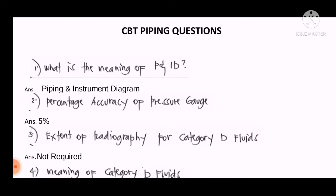Question number two: What is the percentage accuracy of a pressure gauge? First we will define pressure gauge accuracy. The answer is: pressure gauge accuracy is the difference or error between the true value and the indicated reading expressed on the pressure gauge.